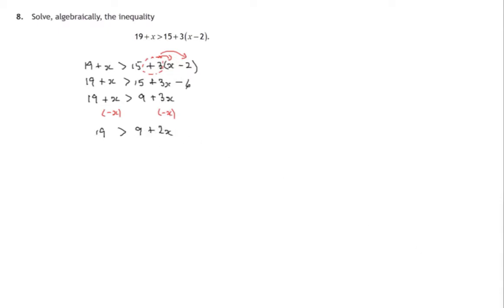And now that leaves us in a position where we can take 9 from both sides. And 9 from 19 gives us 10. That 9 has disappeared. 9 from 9 is 0, and we've got a 2x. So we've got 10 greater than 2x. And let's divide both sides by 2, which still keeps the inequality sign the same way around because we're dividing by a positive number. 2 into 10 is 5, greater than 2 into 2x. Half of 2x is 1x, the 2s cancel there.